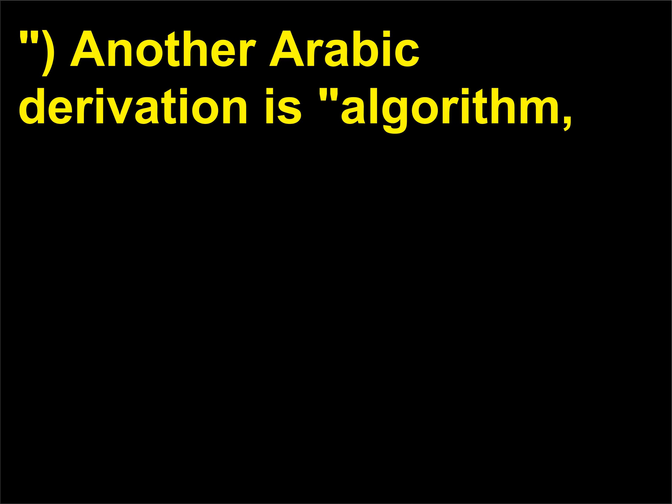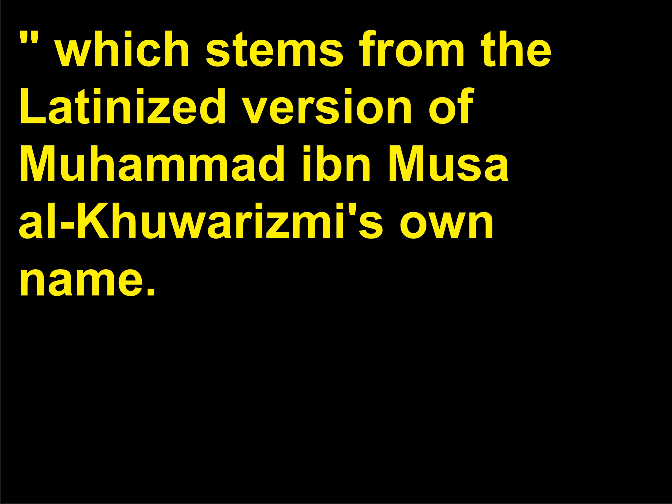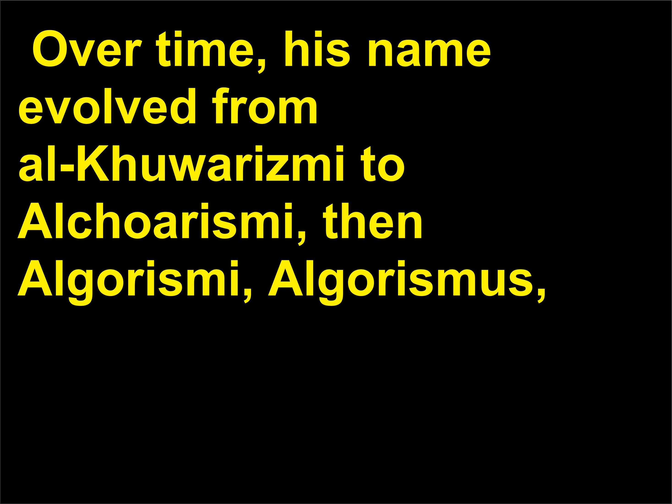Another Arabic derivation is the word Algorithm, which stems from the Latinized version of Muhammad Ibn Musa Al-Khwarizmi's own name. Over time, his name evolved from Al-Khwarizmi to Al-Kharizmi, then Al-Gharizmi, and finally Algorithm.